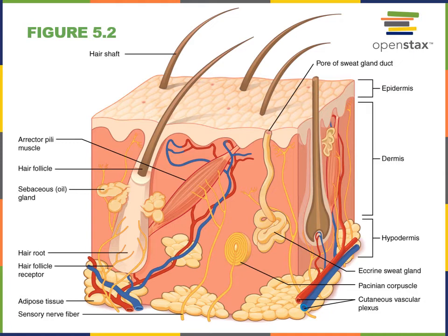The integumentary system is also important for temperature regulation, where glands in the skin produce sweat. Sweat glands produce sweat onto the surface of the skin, which evaporates and cools the body down. The integumentary system also provides sensation for the sense of touch. There are a variety of exteroreceptors — specialized neural tissue in the cutaneous membrane found mostly in the dermis — that provide the sense of touch.